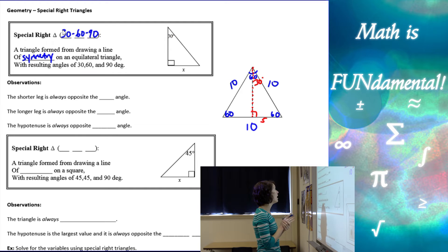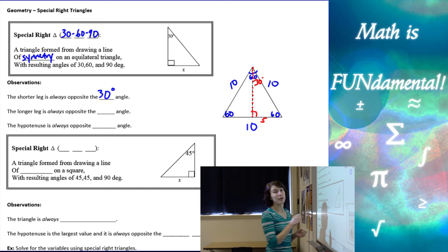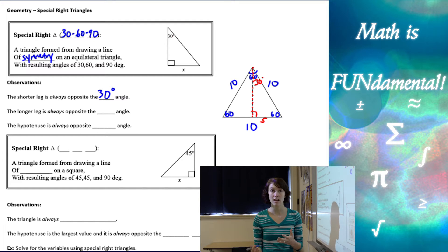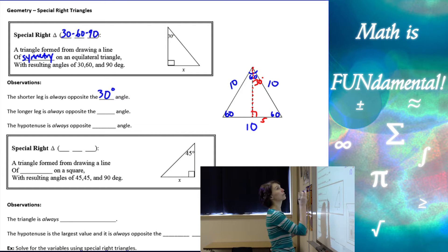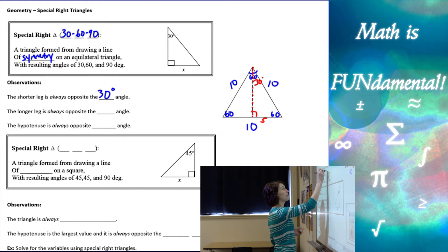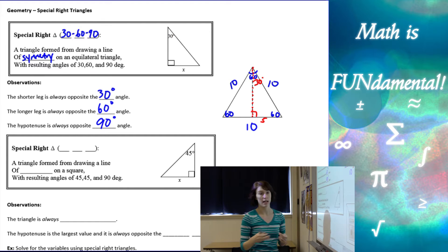The shorter leg is always opposite the 30-degree angle. The smallest side is always across from the smallest angle. The longer leg is always across from the 60-degree angle, and the hypotenuse is always across from the 90-degree angle.